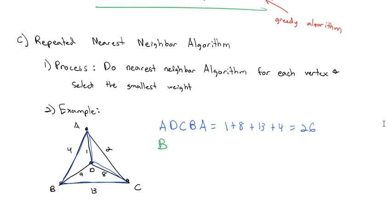But let's try a different one. Let's start at B and see what starting at B does. Going from B, the nearest neighborhood would be to go up to A. That gives us a weight of 4. From A, the nearest neighbor is D, giving us a weight of 1 more. From D, the nearest neighbor is C, giving us 8 more. And then we have to go back to B to complete our circuit, which gives us 13 more for a total of 26. And as you notice, that actually generated the exact same graph, just starting at a different point, but we covered the exact same path.